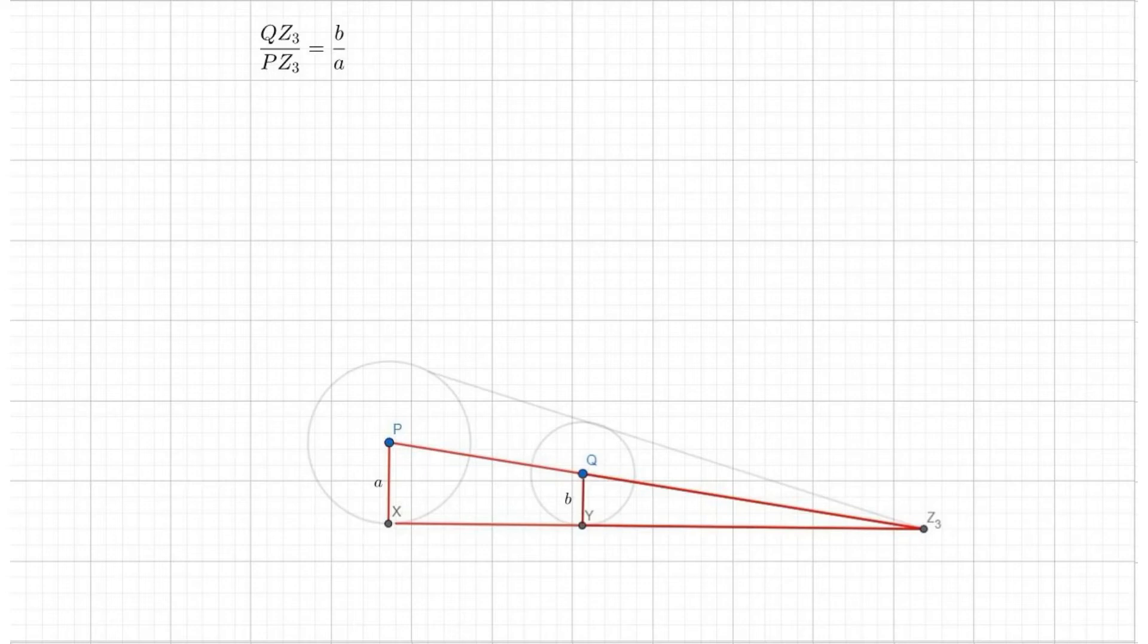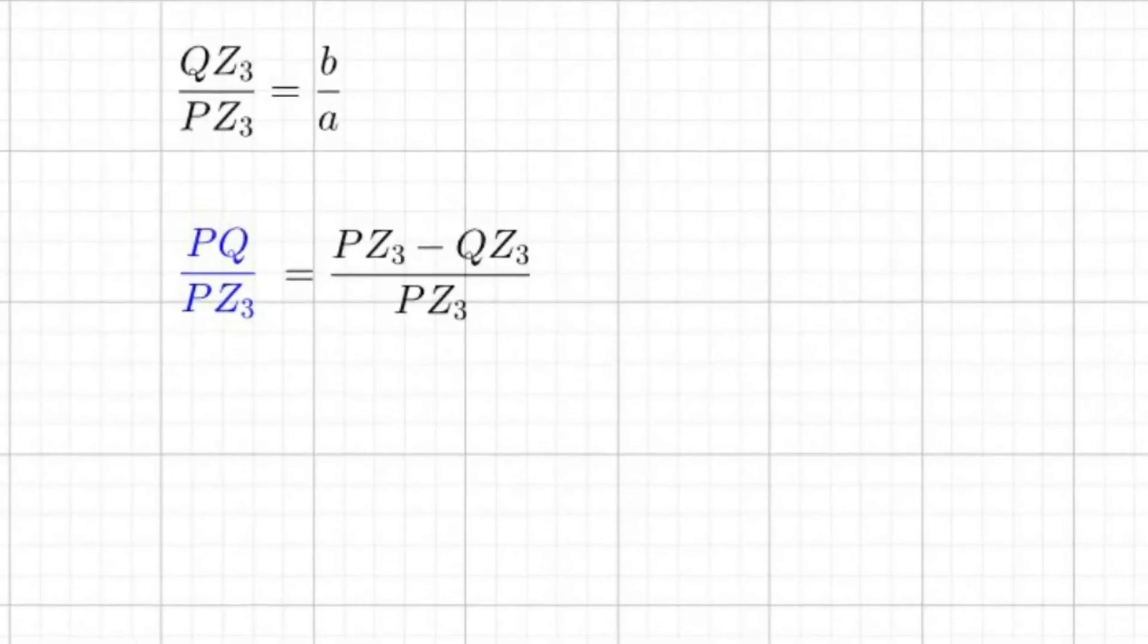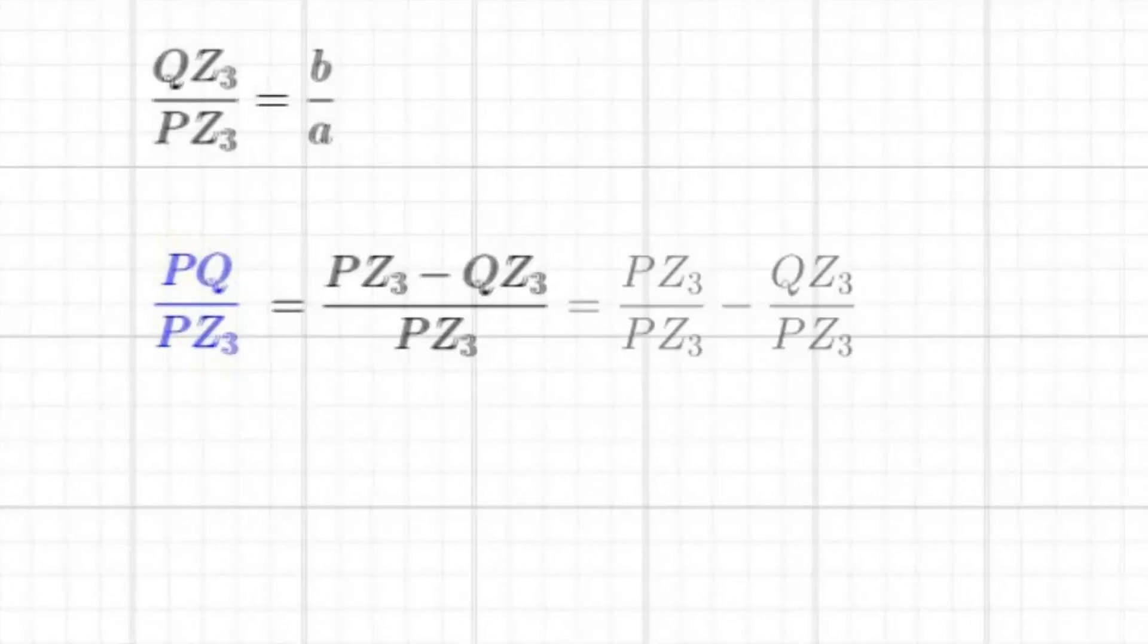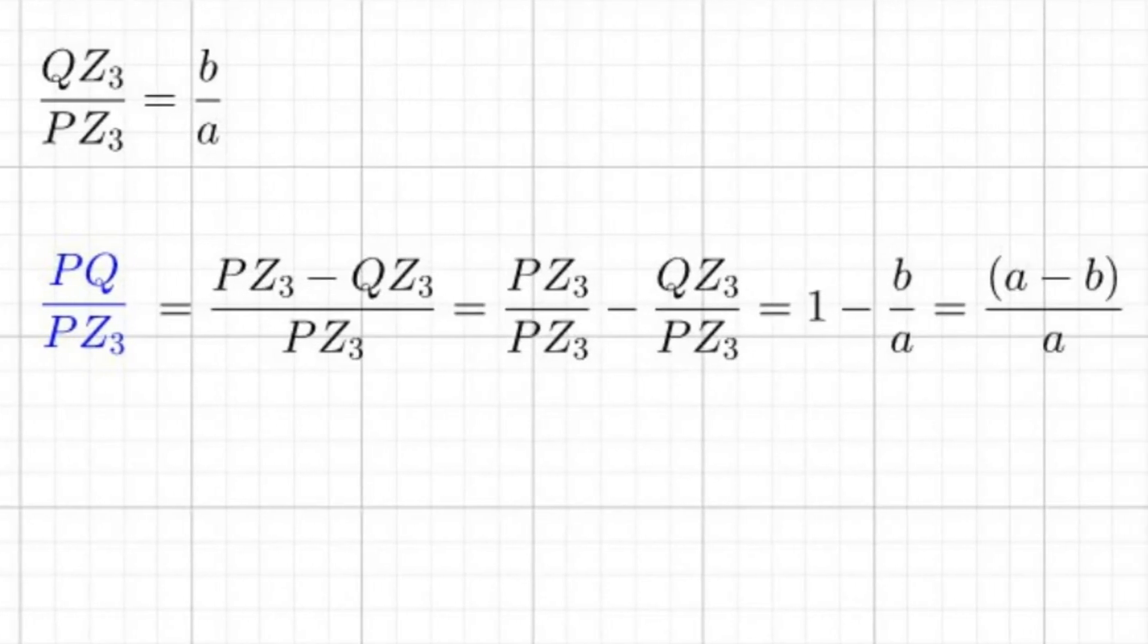However, we're interested in the ratio involving PQ and PZ3, which we can now write in terms of B and A with some substitution. We see that PQ is equal to PZ3 minus QZ3, which we can use to our advantage and separate out into a difference of two fractions and rewrite as A minus B over A.